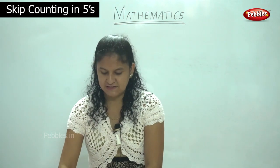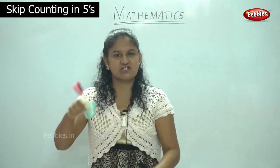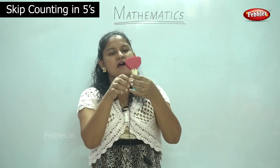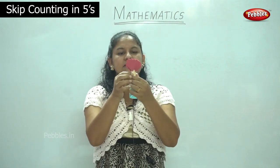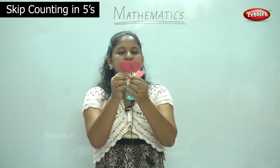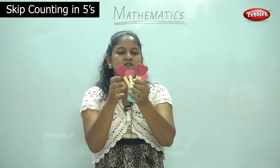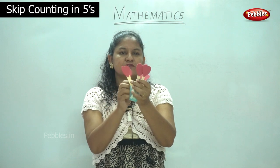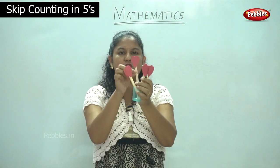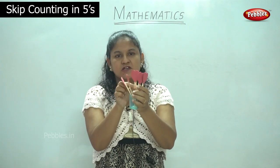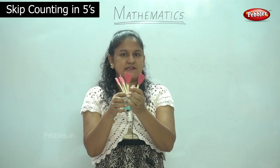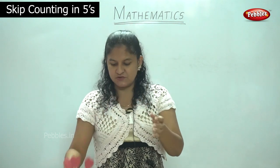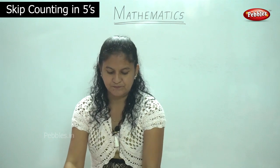I have the next in the shape of a heart. This is 1, 2, 3, 4 and 5. So I have grouped these ice creams into 5 each.